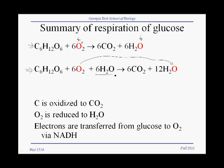So what we end up with is water on both sides of the equation. If we subtract six molecules of water from both sides, then we end up with the top equation, which is sort of a summary balanced equation. But again, the second equation gives you a much more accurate picture of what's going on. Here we can also see that the six carbon atoms are oxidized and turn into the six carbon atoms of CO2.